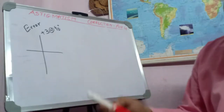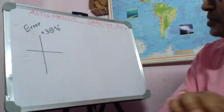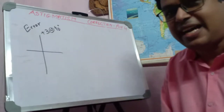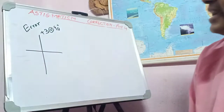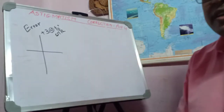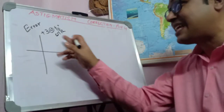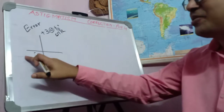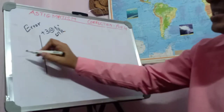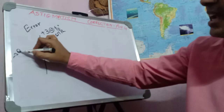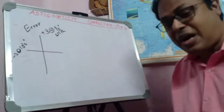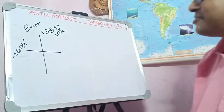Say for example, this patient has plus 3 at 90 degrees — this is the error in the eye. So this patient has with-the-rule astigmatism. Remember, this can also be denoted as minus 3 at 180 degrees. Plus 3 at 90 degrees means minus 3 at 180 degrees, and this is what we learned in parts 1 and 2 of the video series.